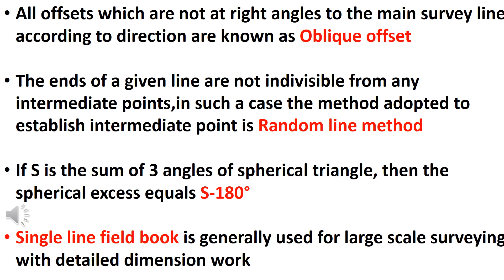All offsets which are not at right angles to the main survey line are called oblique offsets. If the ends of a given line are not visible from any intermediate points, the method adopted to establish intermediate points is the random line method.